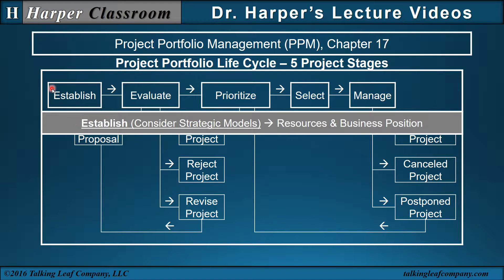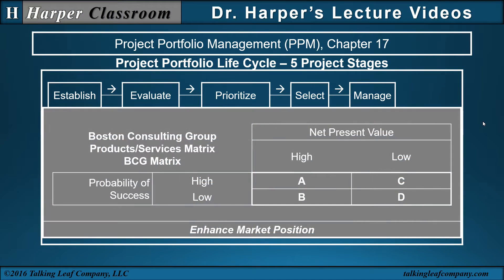Establish. Consider strategic models that will be used to build a project portfolio that will align the resources with the business position. Wysocki identifies four models as examples. The Boston Consulting Group Product Services Matrix, BCG Matrix, identifies the probability of success, high and low, and the net present value, high and low, and places projects within sales categories, buckets that will enhance the market position.